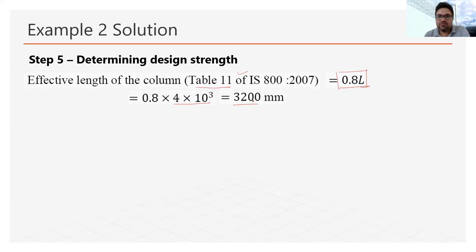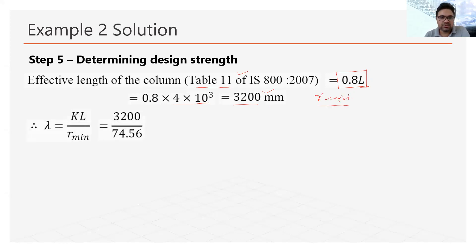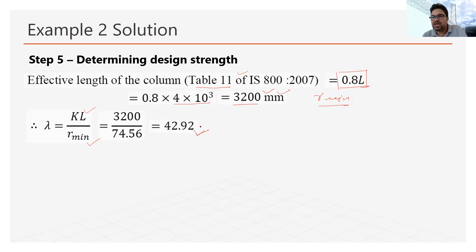With the effective length KL = 3200 mm and the minimum radius of gyration R = 74.56 mm, we calculate the slenderness ratio lambda = KL/R = 3200/74.56 = 42.92.